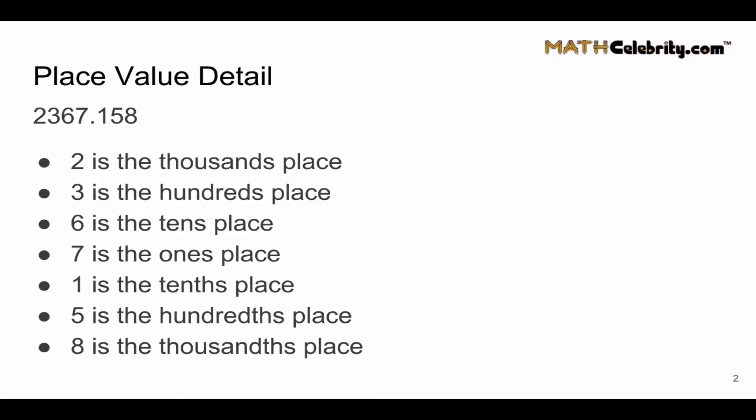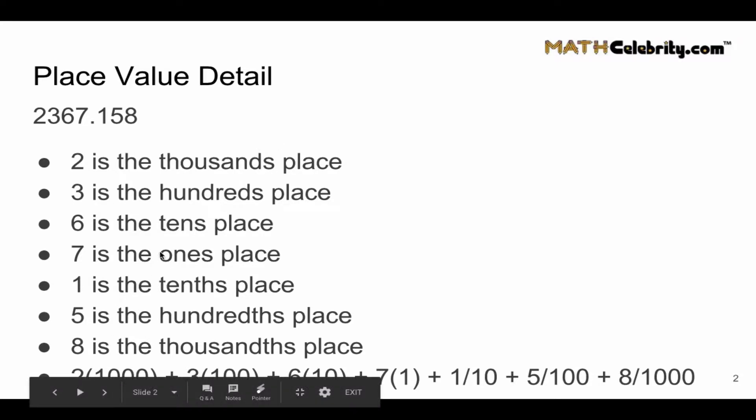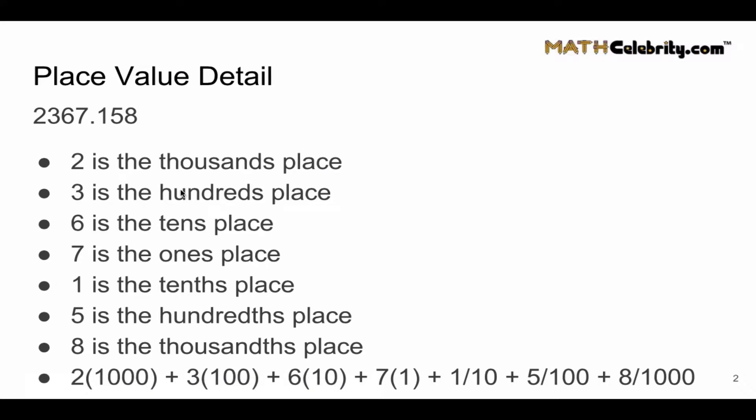If 2 is the thousands place, what we're saying is we multiply 2 by a thousand. Same goes for 3, 6, and 7. Everything to the left of the decimal place is multiplied by a factor of ten.